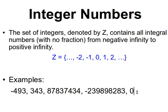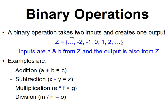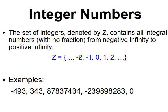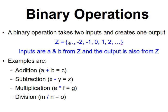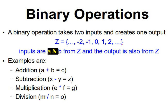For binary operations: binary operations are operations which take two inputs and create one output. In the context of integer numbers Z — from negative infinity through zero and on to positive infinity — if we take two inputs A and B, both from Z (both integers), then the output of any binary operation will also belong to Z.